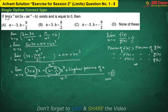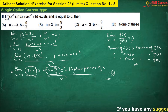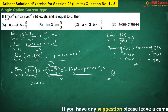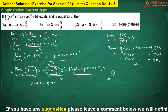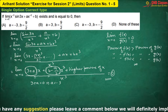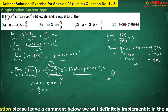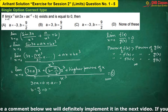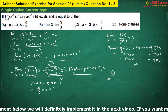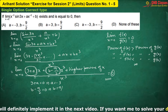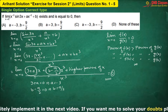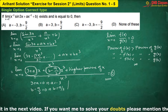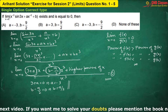Therefore, to have the value of this limit equals to zero, you must have three plus a equals to zero, that implies a is minus three. And b minus nine by two equals to zero, that implies b equals to nine by two. Hence, option A is correct.